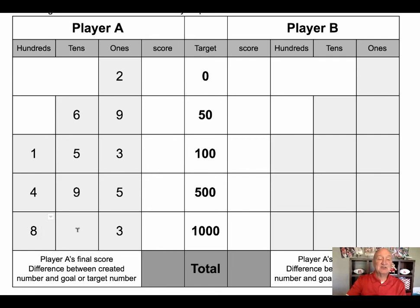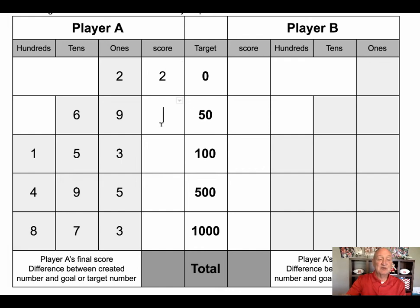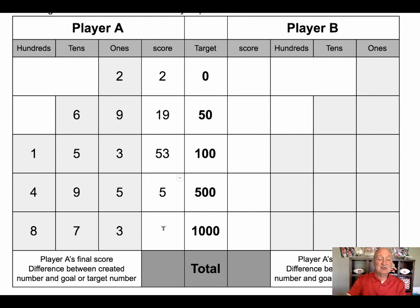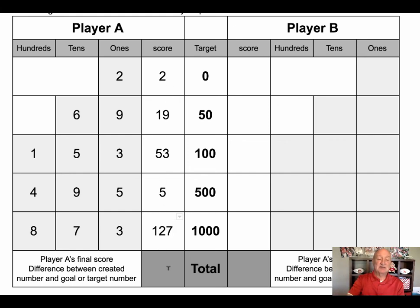My next number is an eight — that's pretty high, so I'm going to go with my eight there. And then my last number is a seven, so I'm going to put my seven there. Now I find the difference between these: this difference is two, this difference is 19, this difference would be 53, this distance — even though it's negative, we always make these positives — so this distance would be five. And then this distance here would be 127. My total score would be the sum of all these, and your goal is to get this total score as small as you can.